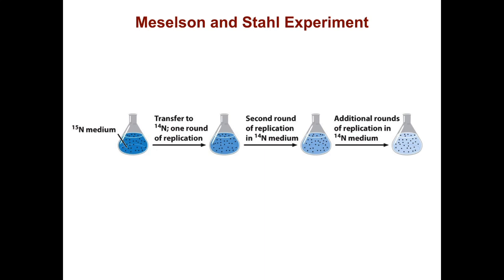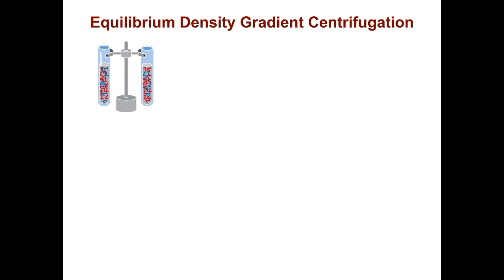To do this, they grew bacteria in medium that contained two isotopes of nitrogen: one that was heavy, nitrogen-15, and the other one that was lighter, nitrogen-14. When the bacteria grew in this medium, they would incorporate the radioactive nitrogen into their DNA. Then you can separate the DNA using an equilibrium density gradient that is put under centrifugation.